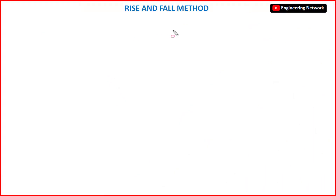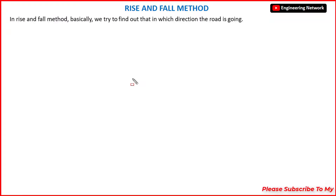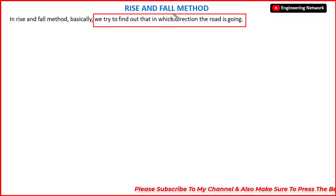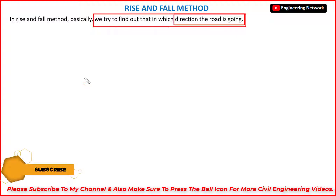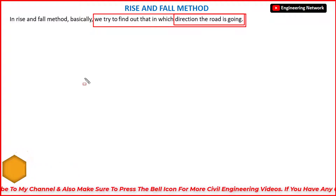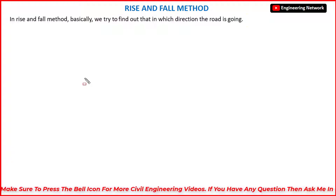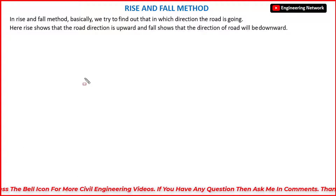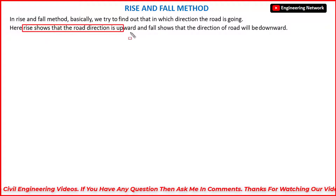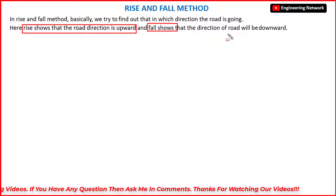Today our topic is the rise and fall method in leveling. In the rise and fall method, we try to find out in which direction the road is going — whether the road is going upward in slope or downward in slope. Rise shows that the road direction is upward and fall shows that the road direction is downward.